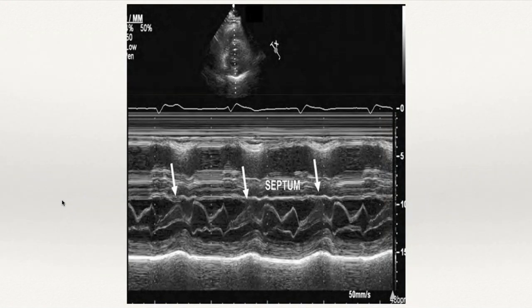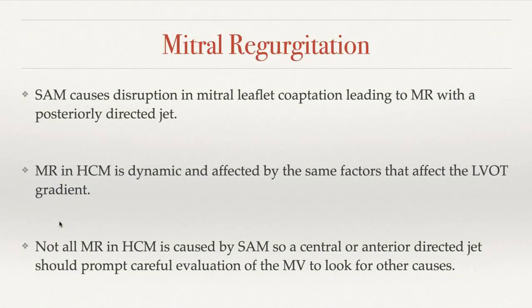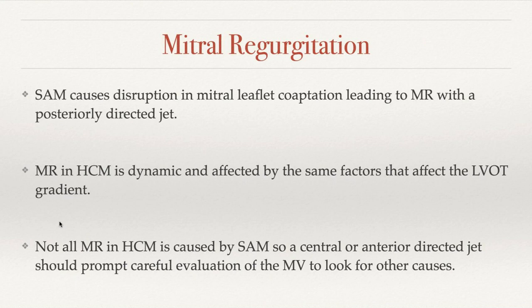On M-mode, you can clearly see the mitral valve leaflet going into the LVOT and causing obstruction. Because of this pulling force on the anterior leaflet, it causes disruption in mitral valve coaptation, leading to MR — usually a posteriorly directed jet since the anterior leaflet is being affected. Similar to LVOT gradients, MR is dynamic in HCM. If we see a central or anterior directed jet, it should prompt careful evaluation of the mitral valve to look for other causes contributing to the regurgitation.